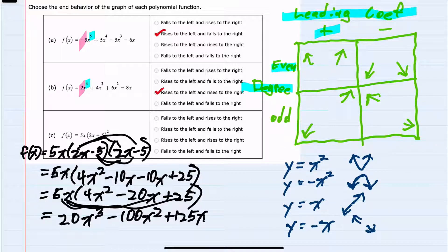However, importantly here, we have an odd degree. So it's going to be like our linear example where one end goes up and the other end goes down.